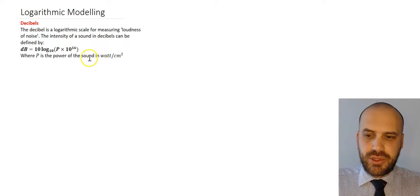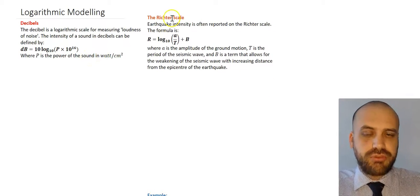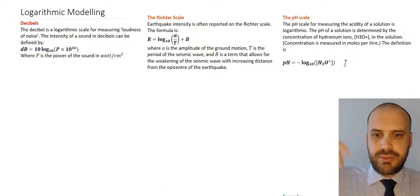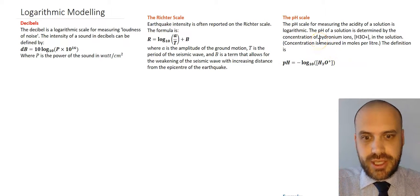For example, sound is measured using something called decibels, which is a logarithmic scale. Earthquakes are measured using the Richter scale, which is a logarithmic scale. The strengths of acids and bases are measured using something called the pH scale, which is a logarithmic scale.